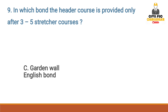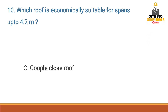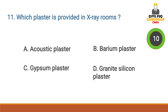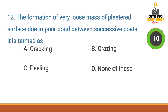Answer option C: garden wall English bond. Next question: which roof is economically suitable for spans up to 4.2 meters — answer option C: coupled close roof. Next question: which plaster is provided in X-ray rooms?